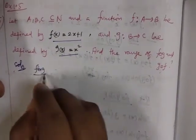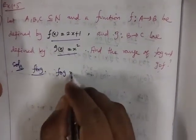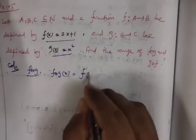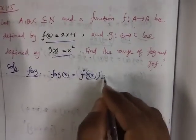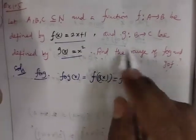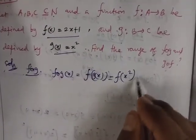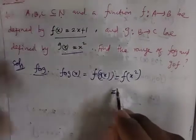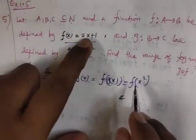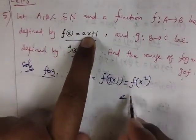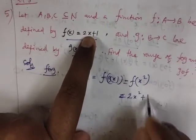First we have f composite g of x, which is f of g of x. f of x squared. In the function f, replace x by x squared. This gives us 2x² + 1.